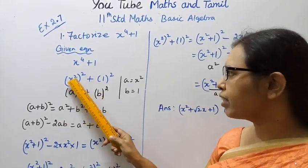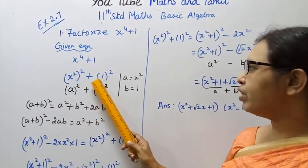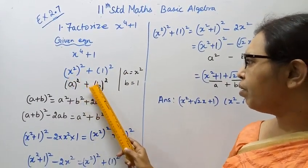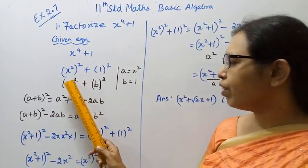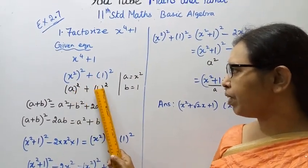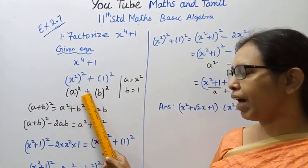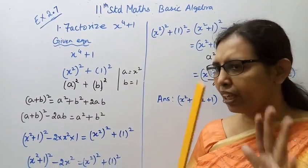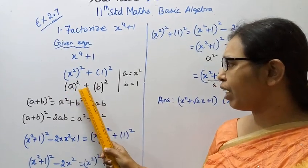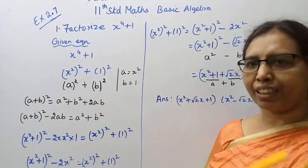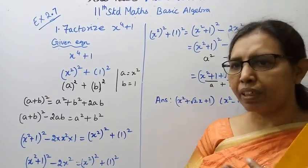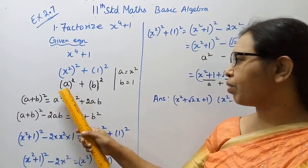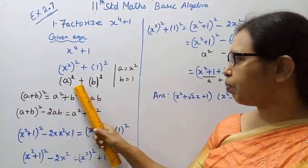x⁴ is (x²)², and 1 is 1². So this is a² + b² form, where a is x² and b is 1. Now for a² + b², we have the easy identity a² - b² = (a-b)(a+b). But students may be confused — can we use that identity here? No, because this is a² + b², not a² - b².